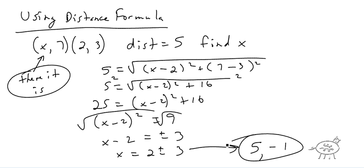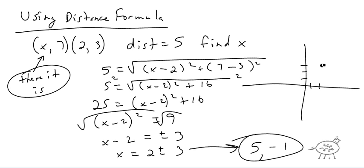Think about why you get two answers. The given point is (2, 3), and we're looking for a point (x, 7). On the graph, x could be at negative 1 or at 5 — both are the same distance of 5 from the point (2, 3). That makes sense why you have two answers for that problem.